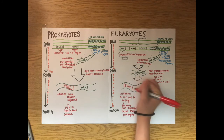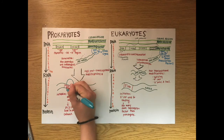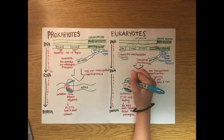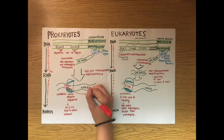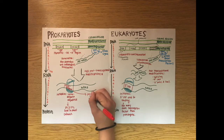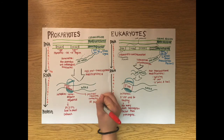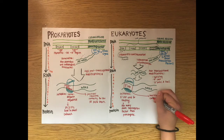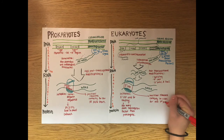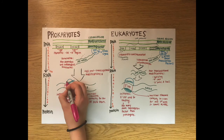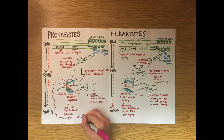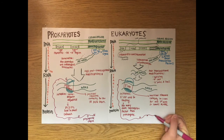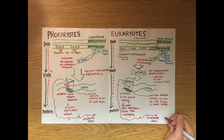In prokaryotes, IF1 and IF2 help bind the small subunit of the ribosome, while eukaryotes have many more initiation factors to help this binding. The Shine-Dalgarno sequence helps position the ribosome correctly at the first AUG to start protein synthesis, while in eukaryotes the 5' cap allows the ribosome to attach to the mRNA, but then the ribosome has to scan for the first AUG after hopping on.